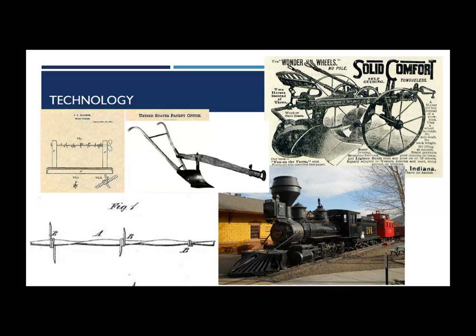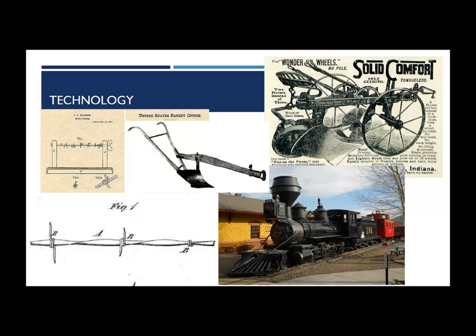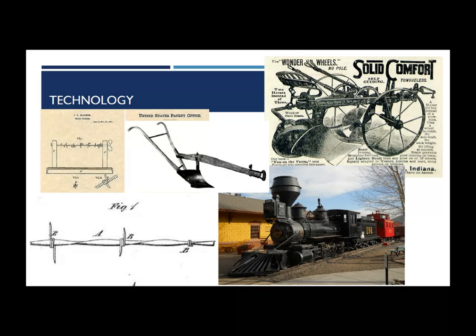Barbed wire created tension between indigenous peoples and Americans settling in the west over what land was open to each group. But it was a cost-effective way of fencing in the west — there were very few trees and it was incredibly dry relative to the east. For mere pennies a yard, you could buy bales wound onto trains and brought west, very effectively and cheaply making it possible for Americans to claim land and maintain livestock.